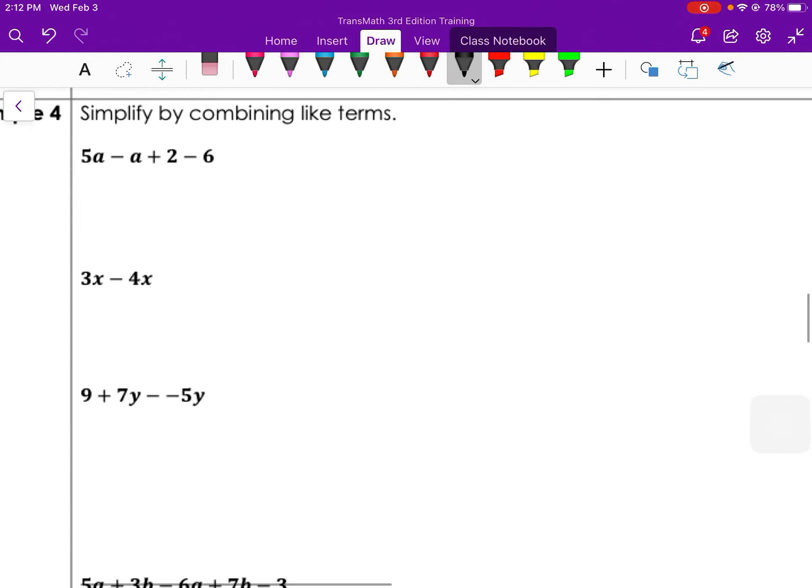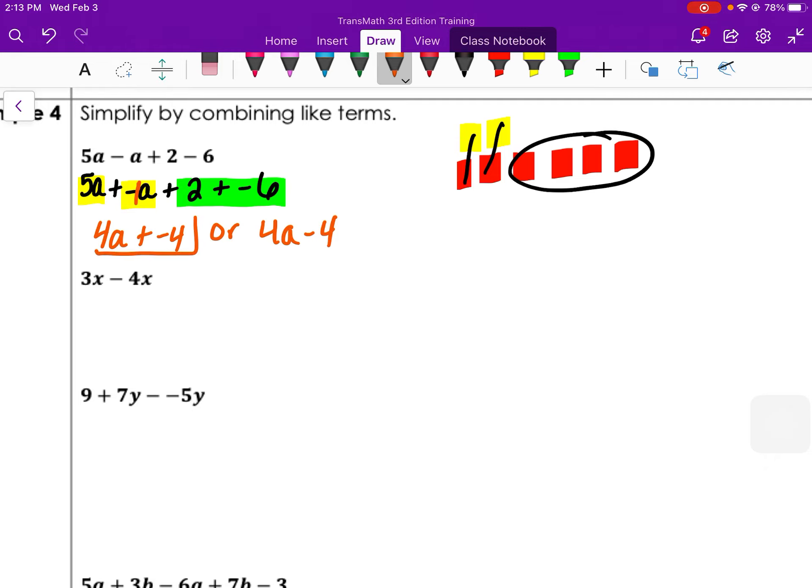So let's practice combining like terms again. First, rewrite it. This would be 5a plus negative a plus 2 plus negative 6. Identify your like terms. 5a and negative a are alike. 5a plus negative 1a would be like 5 minus 1, so 5 minus 1 would be 4a. And then we have 2 plus negative 6. So 2 plus negative 6 would be negative 4 because 6 is bigger. When the signs are different, we find the difference and keep the sign of the bigger number. So 4a minus 4 is the answer.